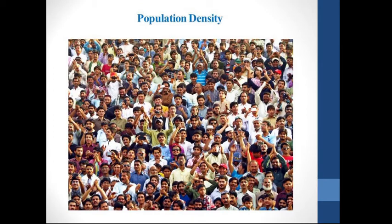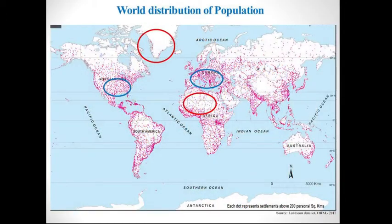Here in this image, you can see crowded people in an area. Like this, the world population distribution has been shown with the help of pink colored dots. In this map, each dot represents settlements above 200 persons per square kilometer. You can see two color circles — a red one and a blue one. Blue color circle shows the higher density of population and red color circle shows the lesser density of population.